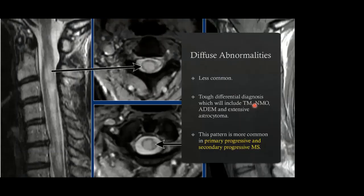The second type of abnormality in MS is diffuse abnormality. These are less common and involve diffuse involvement of the cord expanding over a long segment. In this case, the differential diagnosis is tough and includes transverse myelitis, neuromyelitis optica, ADEM, and in some cases even extensive astrocytoma. This pattern is more common in the primary and secondary progressive forms of MS.